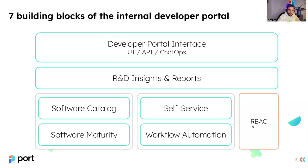RBAC is a key driver for developer experience because it reduces noise — hiding things people don't need to see — so they can just have what they need and follow the golden path, reducing cognitive load. On top of all that, you have the ability to create insights and reports for your organization: tracking deployment success rate, DORA metrics, MTTR, and so on. And lastly, you have the UI, API, and ChatOps interface, which is the unified way to consume all these blocks in one single interface.